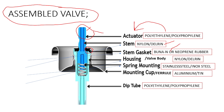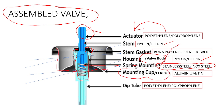Next is the housing, also called the valve body — this entire part is the housing, with the stem gasket on its face. The housing is made up of nylon or Delrin. The spring is made up of stainless steel or inox (inoxidizable steel). The mounting cup or ferrule is made up of aluminum or tin.